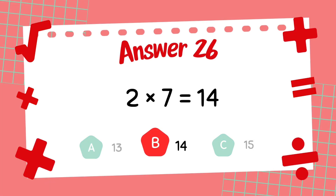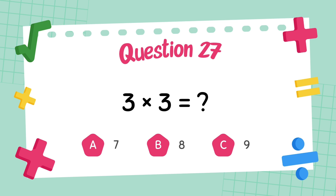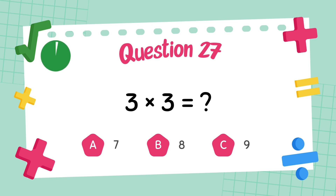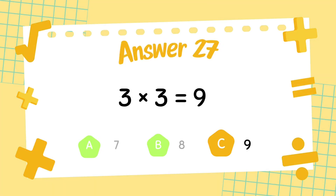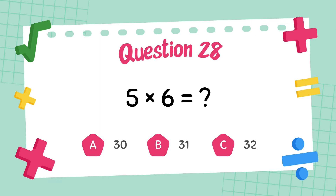What is 3 multiply 3? The answer is 9. What is 5 multiply 6? The answer is 30.